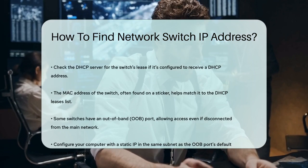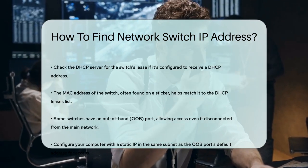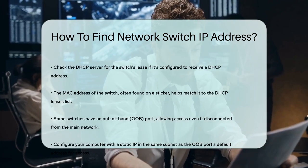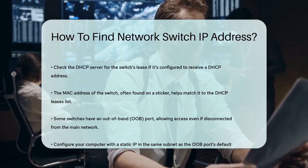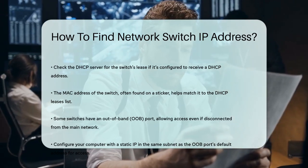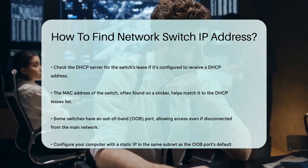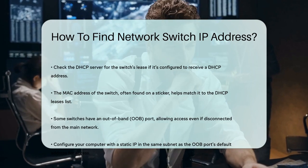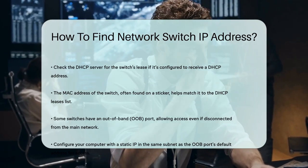For some switches, there's an out-of-band (OOB) port that allows you to access the switch even if it's not connected to the main network. You'll need to configure your computer with a static IP address in the same subnet as the OOB port's default address, typically something like 192.168.2.39. Each of these methods can help you track down the IP address of a network switch, making it easier to manage and troubleshoot your network.